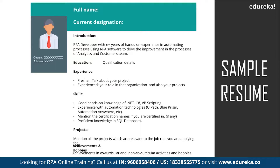You can mention your educational qualifications in chronological order. Start from your post-graduation if applicable, then graduation, then higher secondary education (11th–12th), then school education up to 10th grade. It's always good to maintain chronological order as recruiters are most interested in your most recent and highest qualifications.